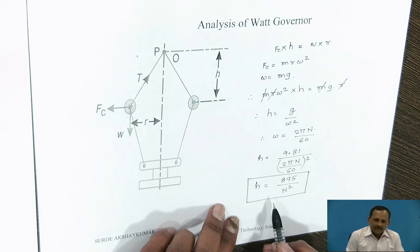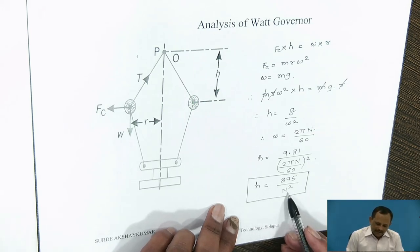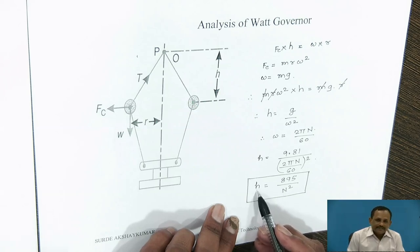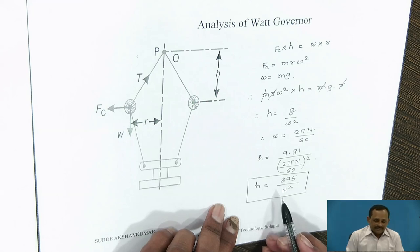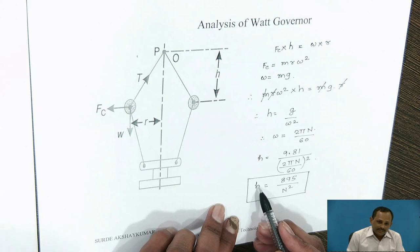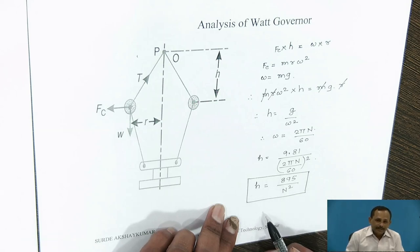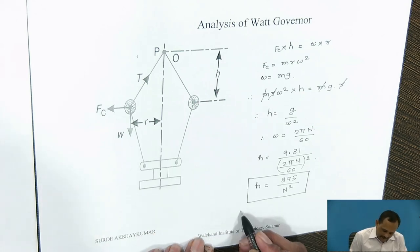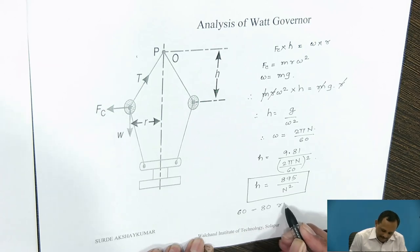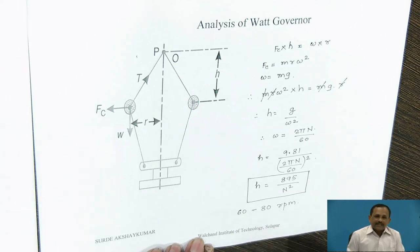At higher speed, the height of the governor is very small. Therefore, when there is little change in the speed of the governor, there is insufficient change in the height, which causes insufficient supply of working fluid to the engine at higher speed. Hence, the VAT governor is relatively used at low speeds, that means between 60 to 80 rpm.